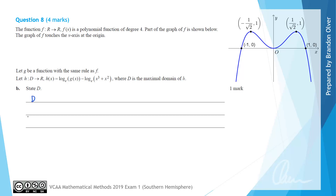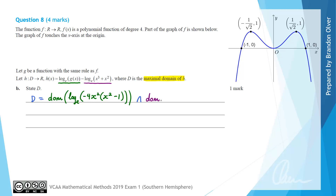The domain d, which is the maximal domain of h, equals the intersection of the domains of the two component rules added together. So it's the domain of log e of g of x — which has the same rule as f of x, which was minus 4x squared times (x squared minus 1) — intersected with the domain of log e of (x cubed plus x squared).